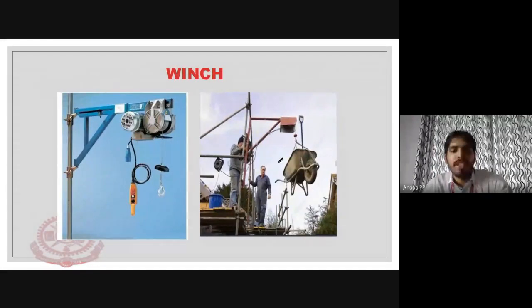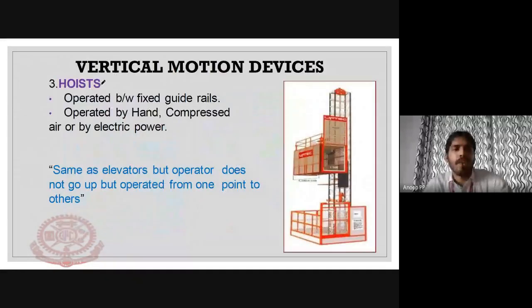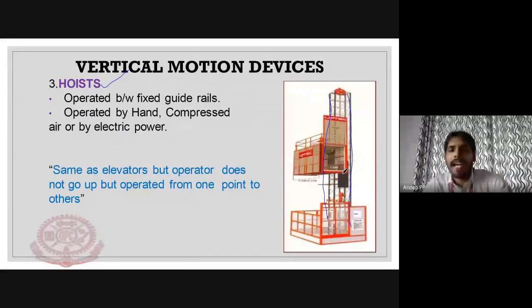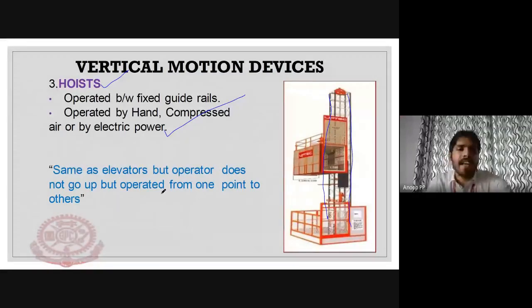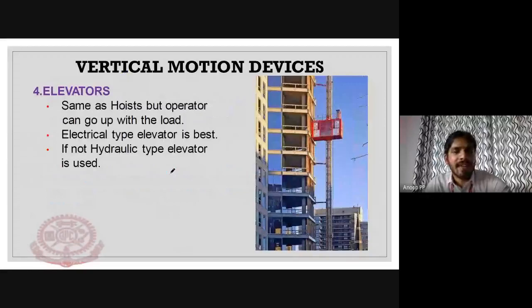The third vertical motion device is the hoist. Hoists are operated between fixed guide rails using electrical power or compressed air. This is known as the hoist. It is similar to an elevator, but the difference is that the operator does not go up; the operator operates from one fixed point.